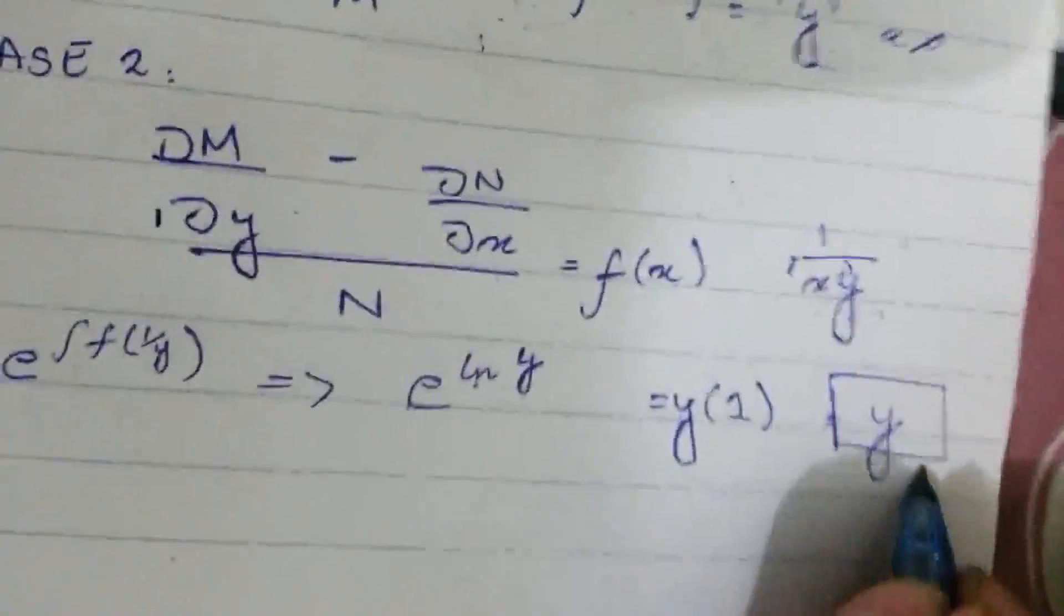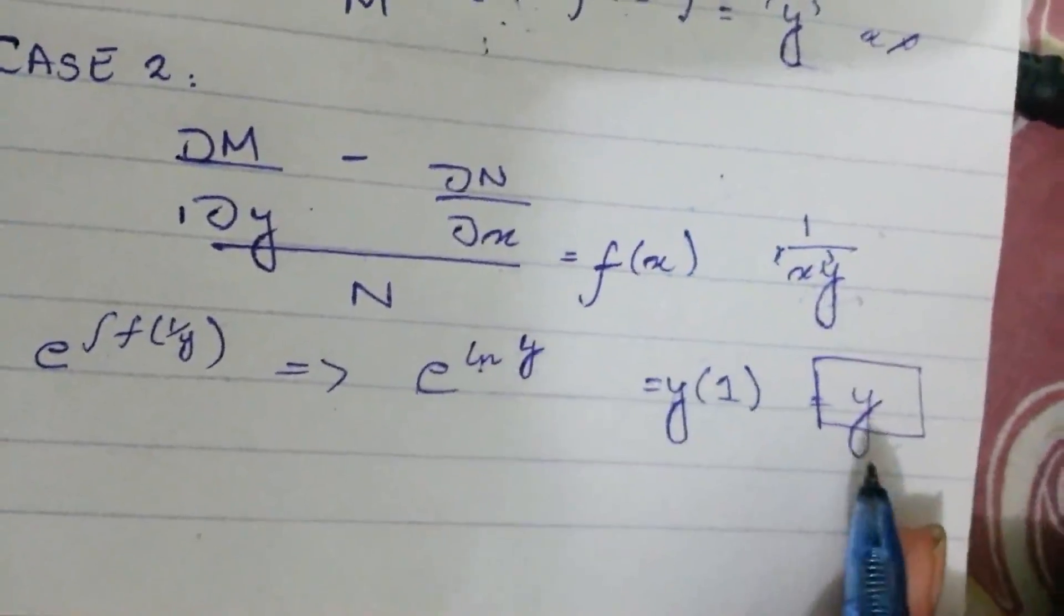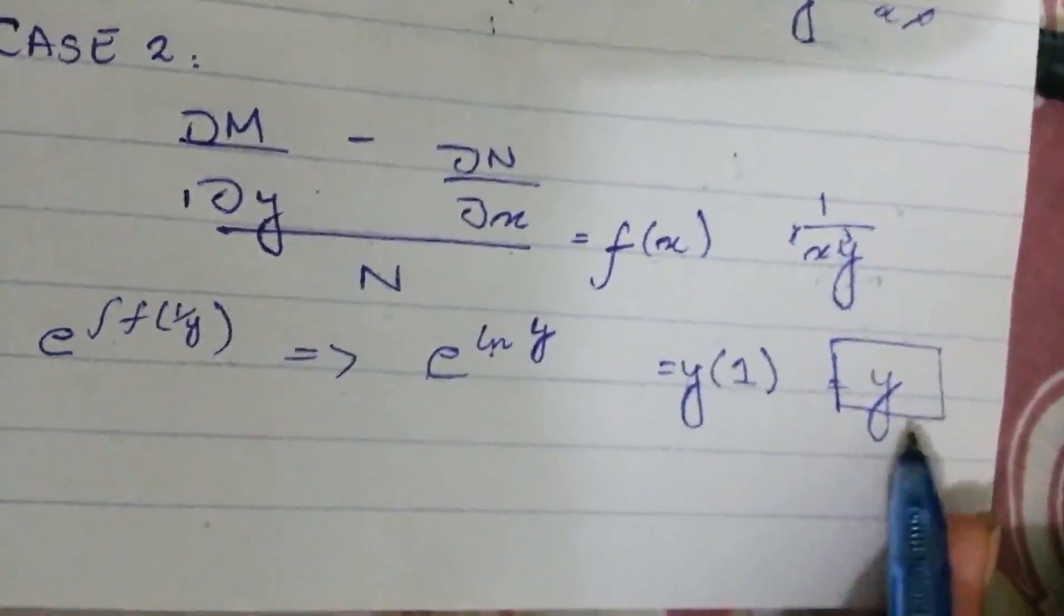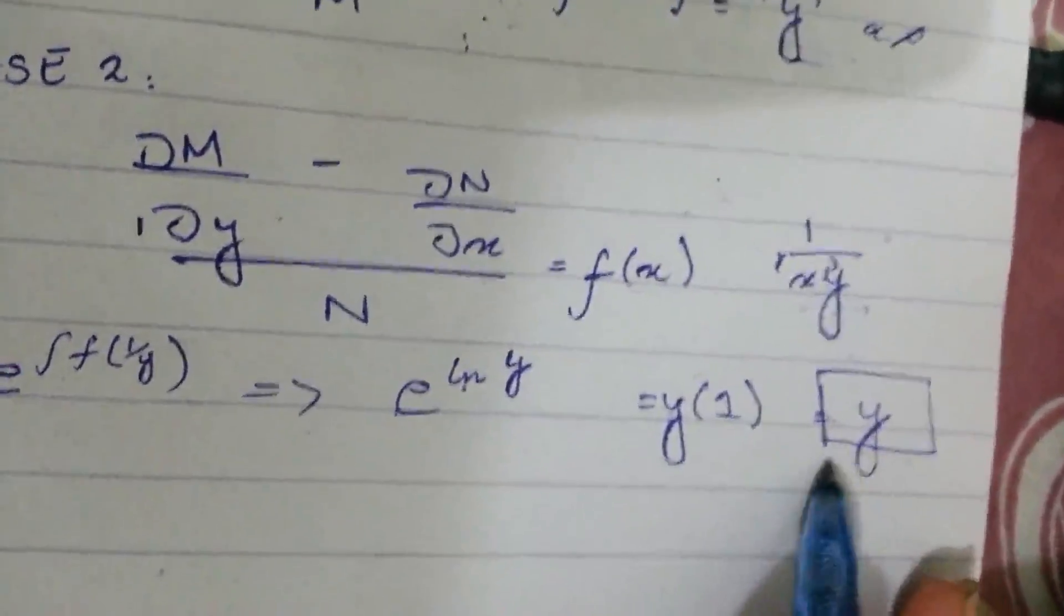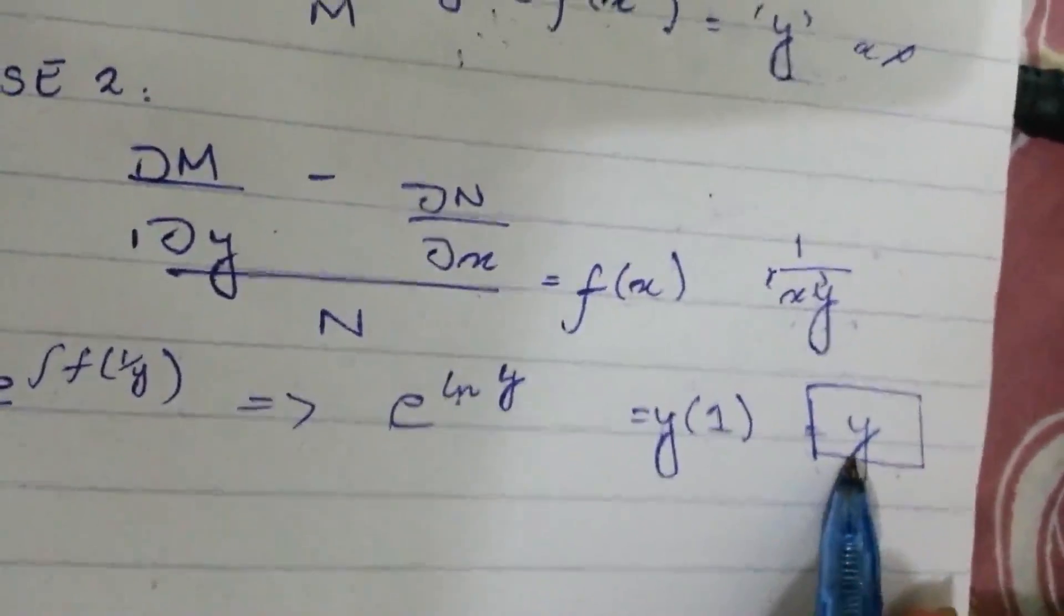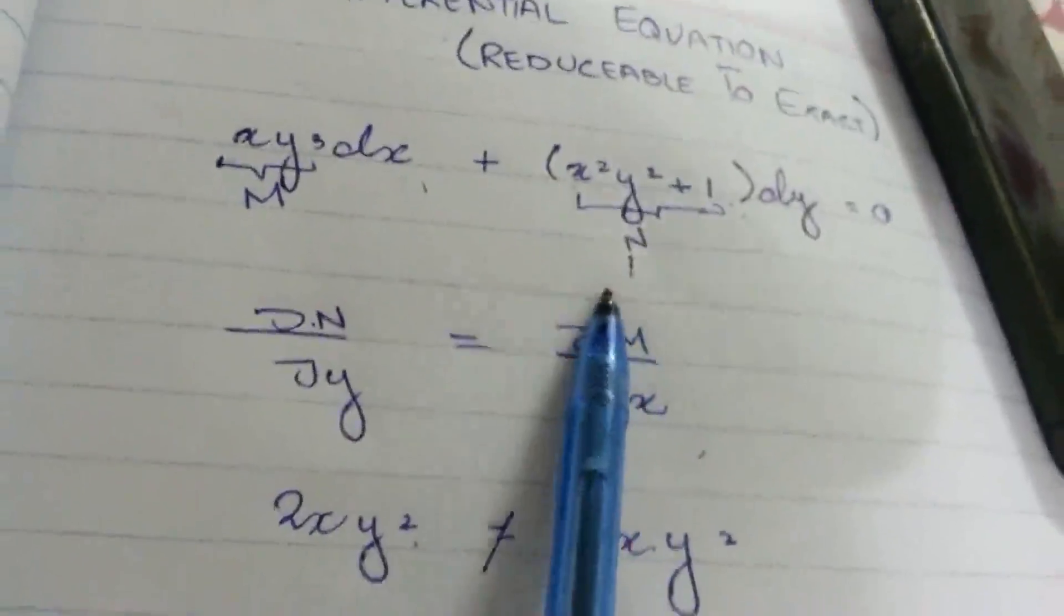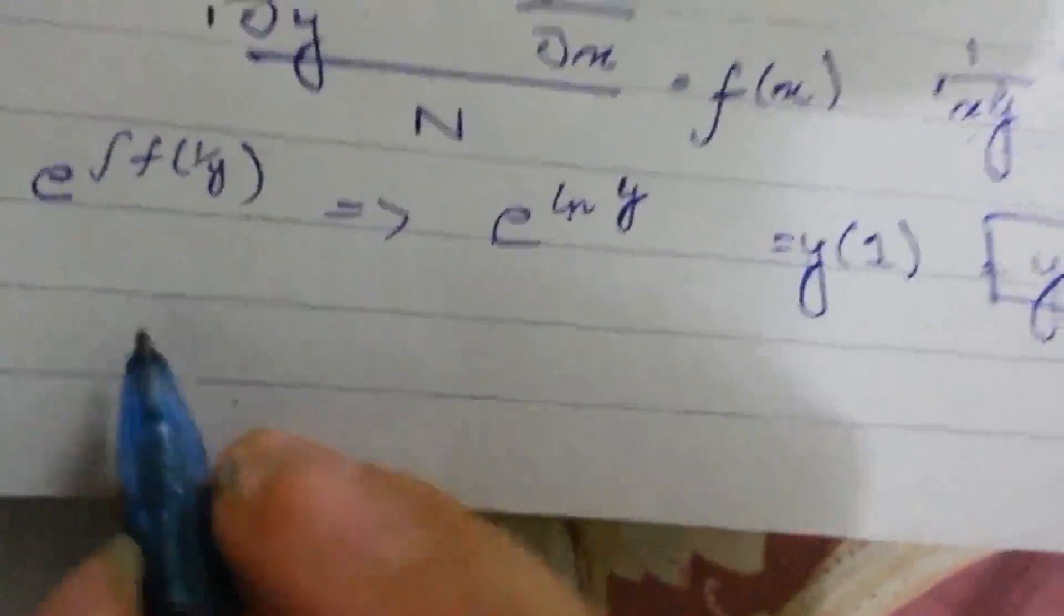How do we reduce the equation using the integrating factor? Remember, to reduce any equation to exact form, we multiply the integrating factor with it.